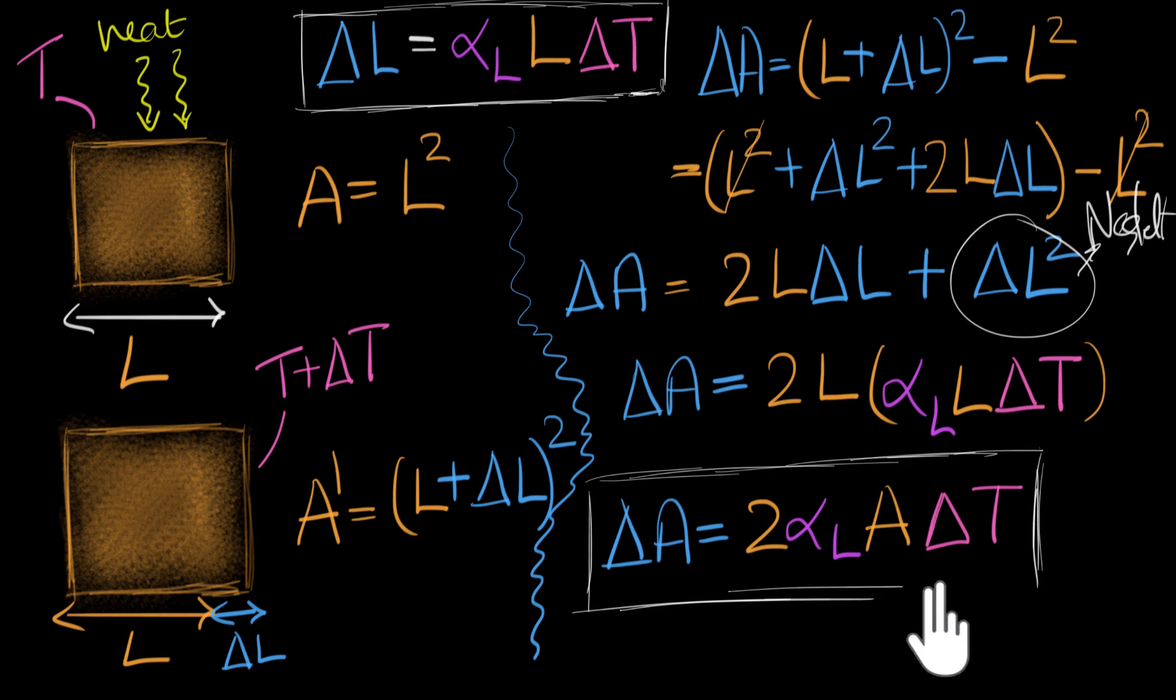And now, now just see what we have done. We have now figured out the change in the area. So if we know what the initial area is, and we know what the change in temperature is, and if we know the alpha L of a material, then we can calculate delta A. We don't need anything more. So just by knowing this, we can figure this out. Can you see the similarity between this expression and this expression?